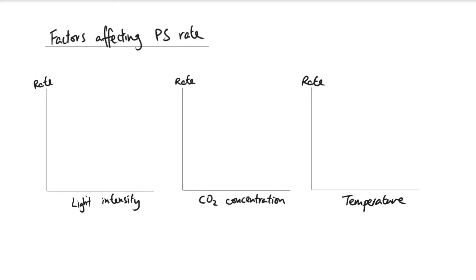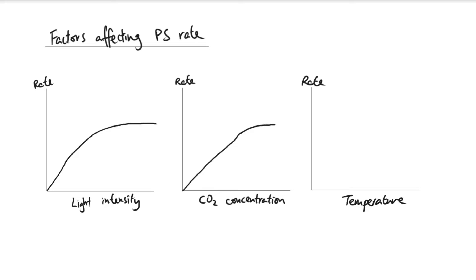Let's look at light intensity first. If there's no light then photosynthesis will not happen. As we have more light the rate of photosynthesis increases, because the more light you get the more energy you have and the more reaction can occur. But eventually it's going to plateau and stay the same. If we look at the graph for carbon dioxide concentration it's pretty much the same — as carbon dioxide concentration increases so does the rate of photosynthesis, but eventually it also flattens and plateaus once it reaches a certain point.